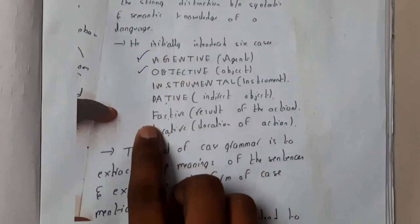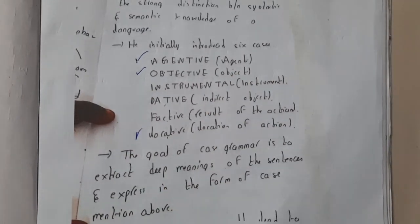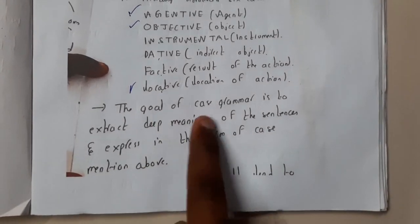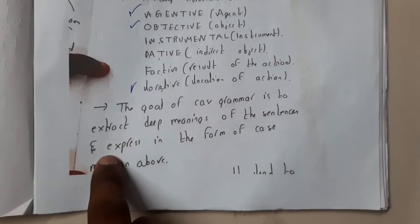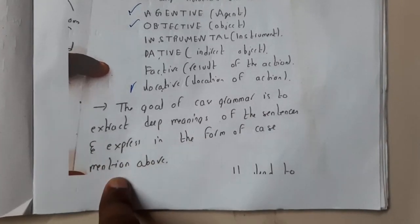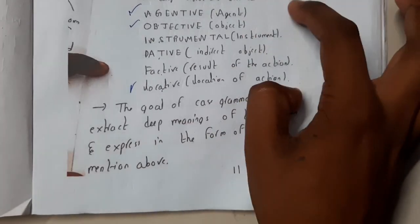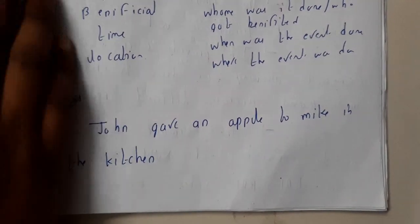These are the three main agents, and some of these are later replaced by other agents in future work. The goal of case grammar is to extract the deeper meaning of a particular sentence and express it in the form of the cases mentioned above. Any kind of statement is broken down into these six parts.